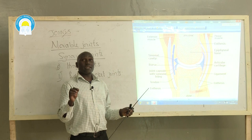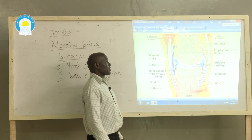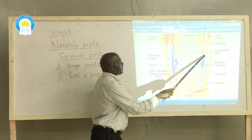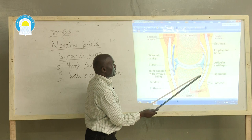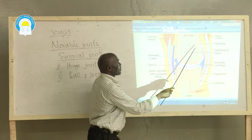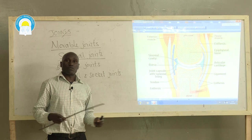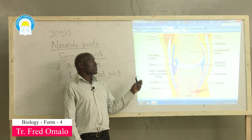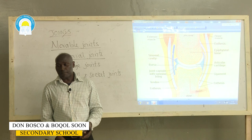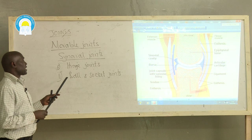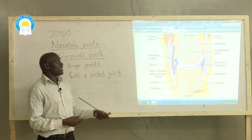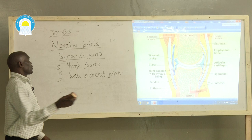Bones within a joint are attached to one another by thread-like structures known as ligaments. Ligaments ensure that during movement, bones do not get out of their original position, and that bones remain in their particular positions during and after movement. This was a general diagram showing the position of the synovial cavity, synovial membrane, articular cartilage, and their functions.